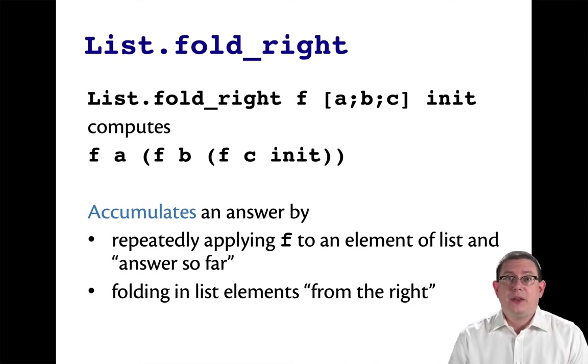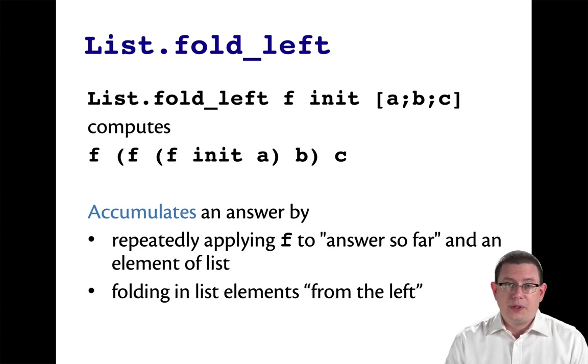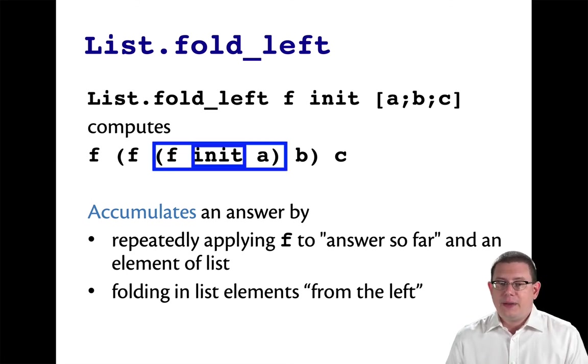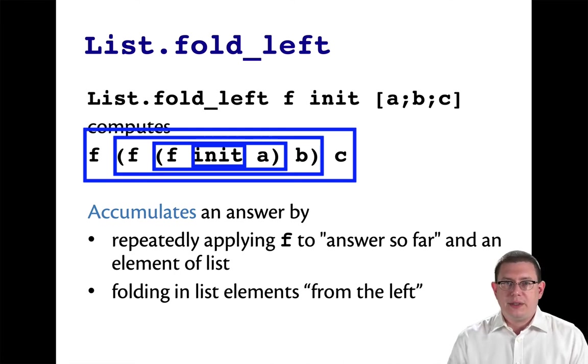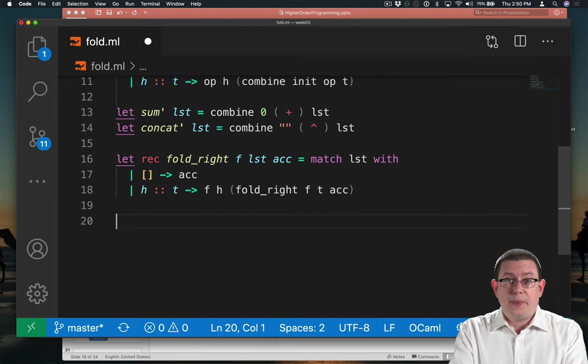As you might have suspected, there is another list library function. It folds from the left. So the idea with fold left is that first, the leftmost element of the list is incorporated into the initial value. It's accumulated as part of the answer so far. So first, we use f to combine init with a, and then with b, and then with c. So we're moving from the left to the right in the list, from the beginning of the list to the end. Let's code that up ourselves.